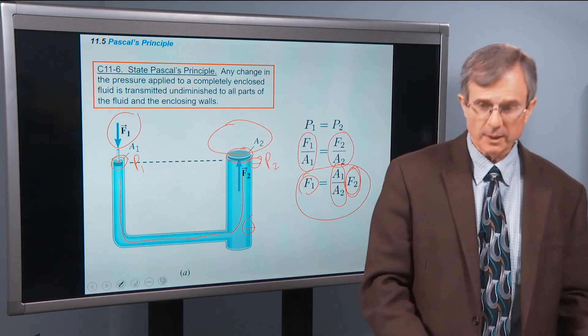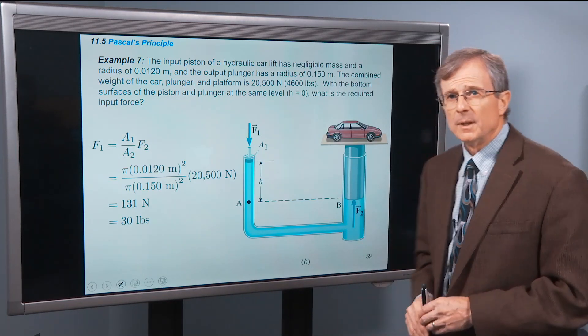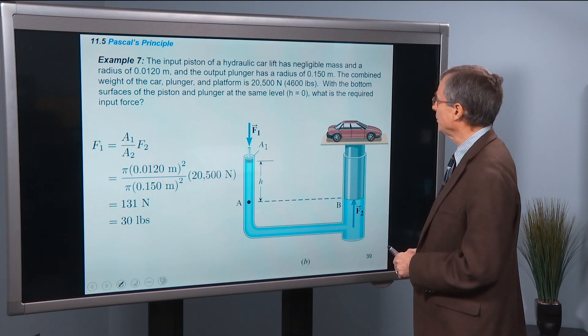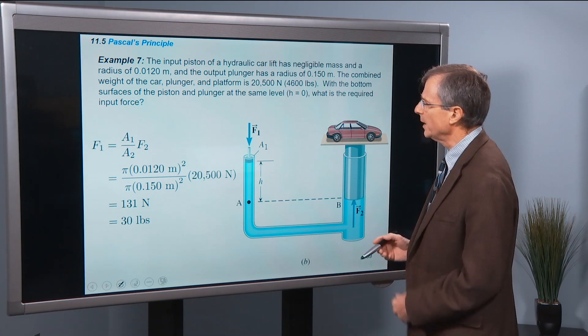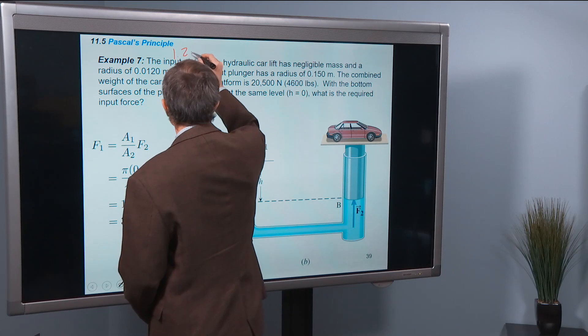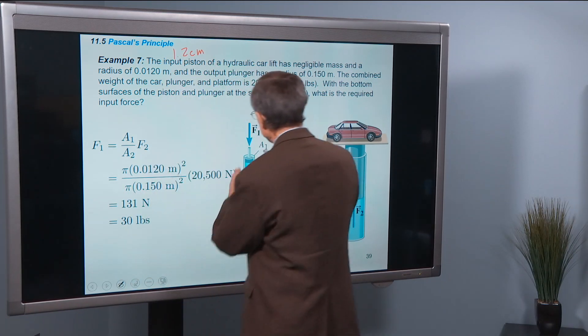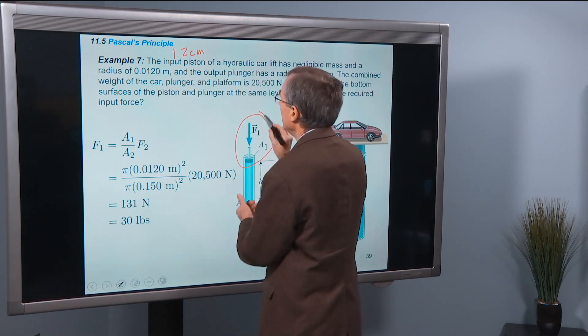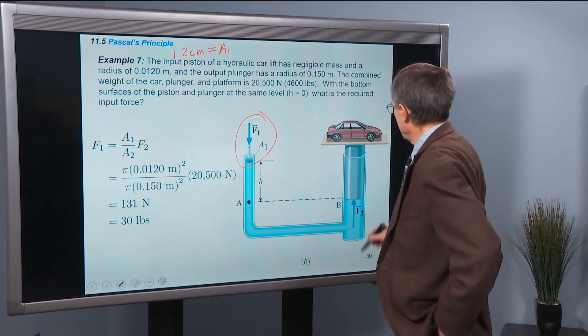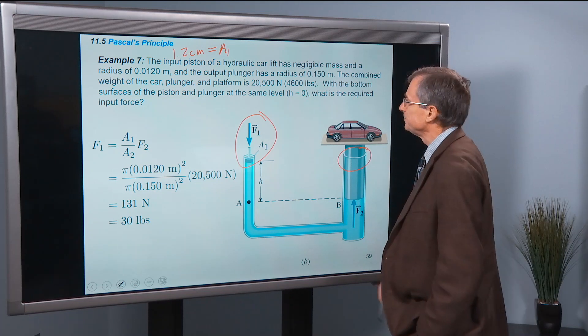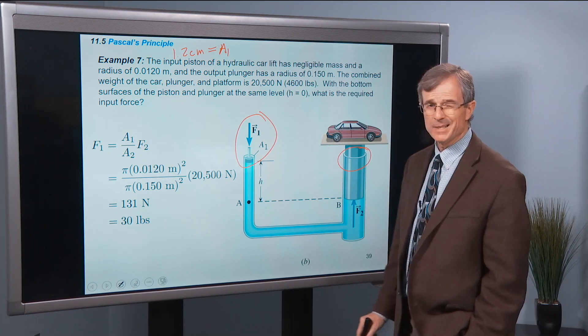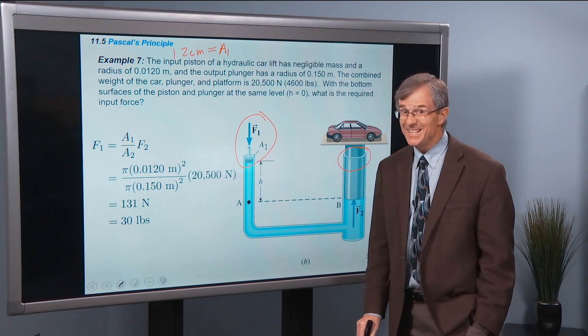So let me just do the calculation. The input piston of a hydraulic car lift has negligible mass and a radius of 0.012 meters—so that's about 1.2, well, it is 1.2 centimeters. So that's the piston here, A1. And the output plunger, so this is the plunger, has a radius of 0.15 meters. So that's 15 centimeters.